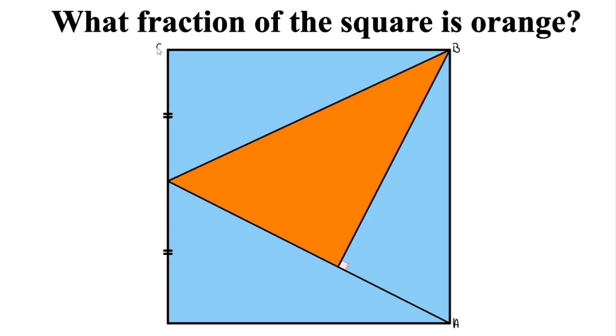And in our square, we have an orange triangle. In fact, we have several triangles — we also have three blue triangles.